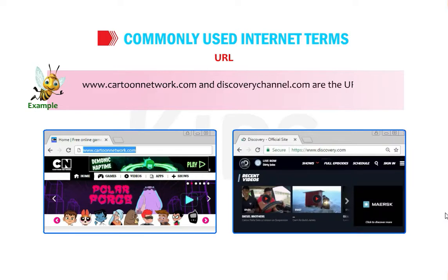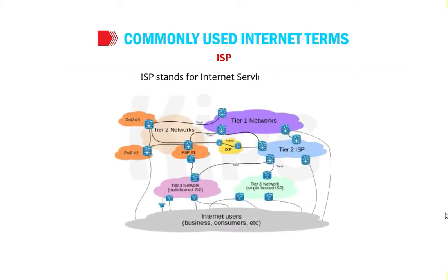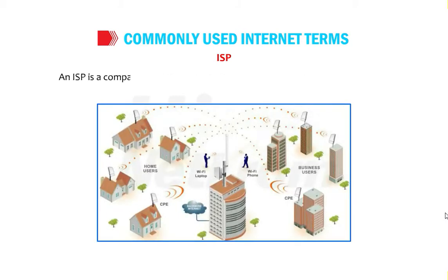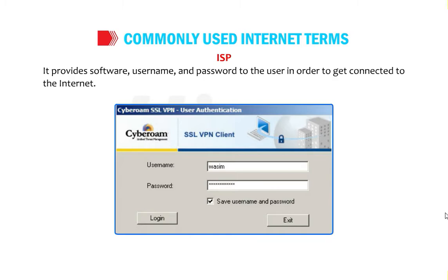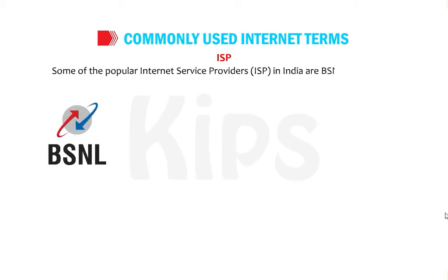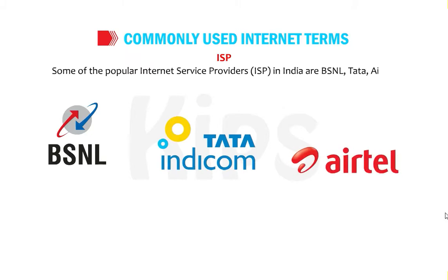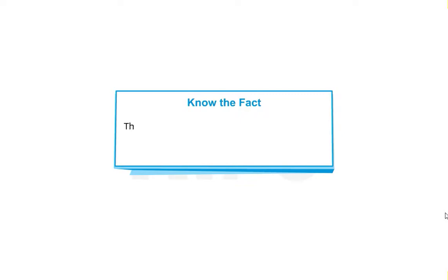For example, www.cartoonnetwork.com and discoverychannel.com are the URLs of Cartoon Network and Discovery Channel respectively. ISP stands for Internet Service Provider. An ISP is a company which offers you the use of the internet in exchange for a fee. It provides software, username, and password to the user in order to get connected to the internet. Some popular ISPs in India are BSNL, Tata, Airtel, Reliance, and Idea.